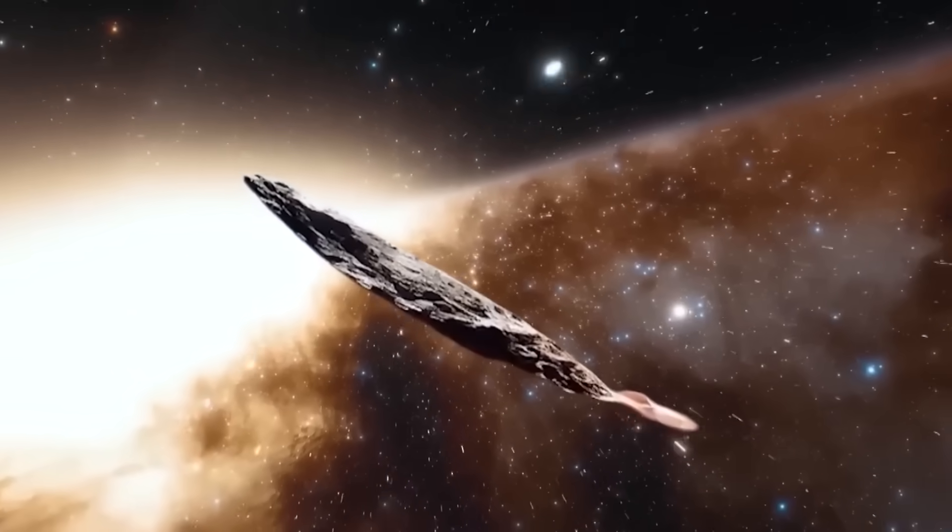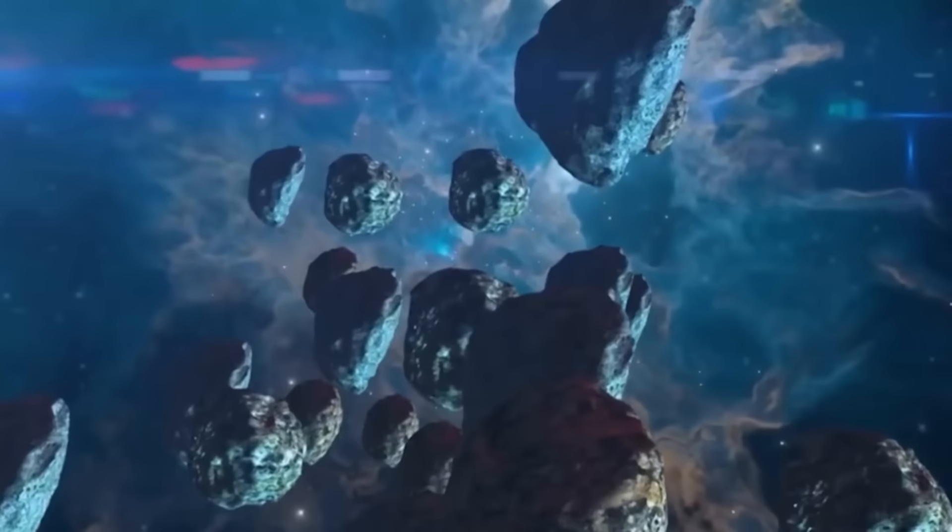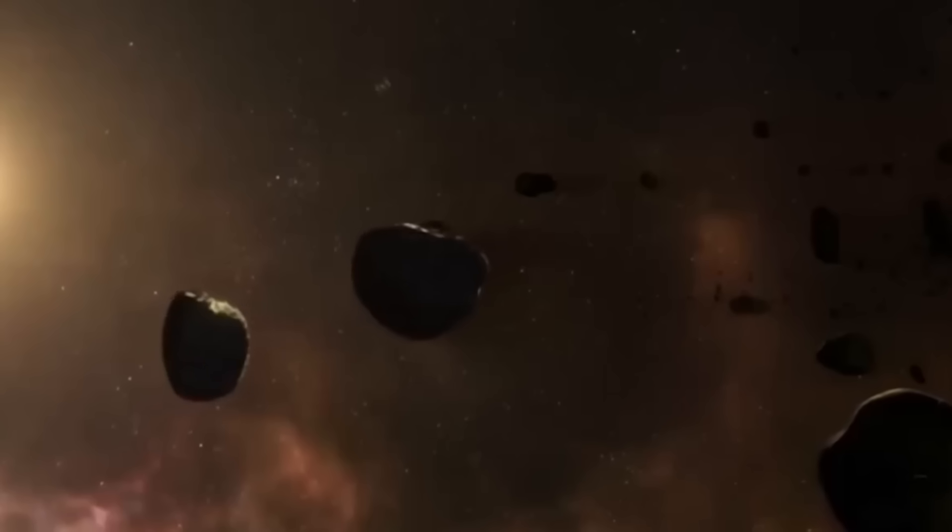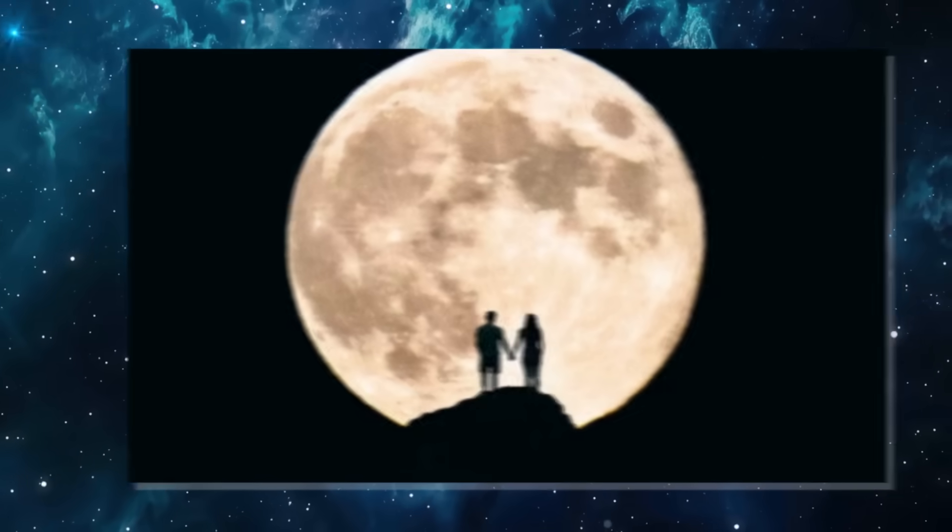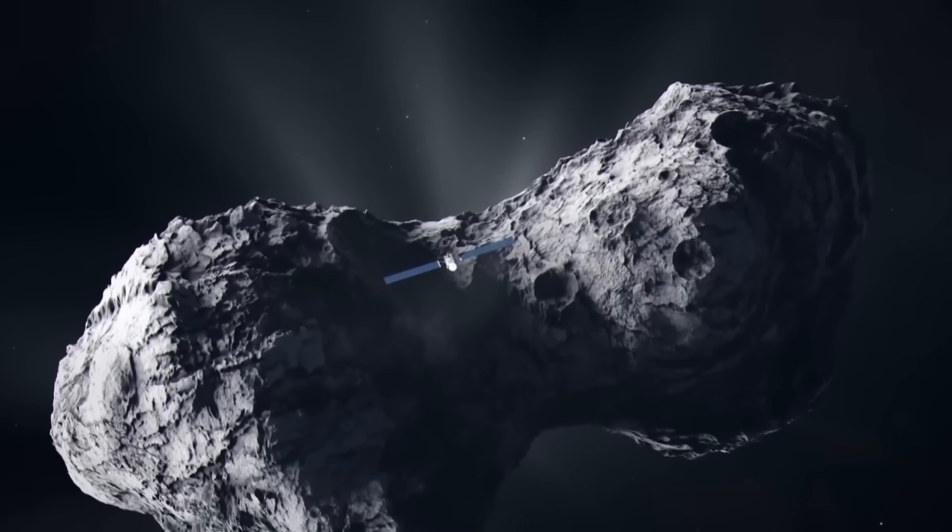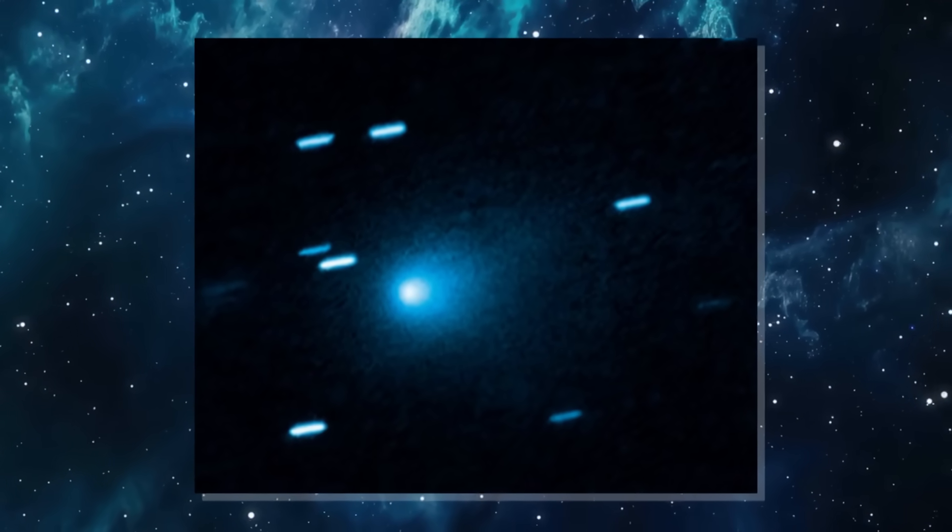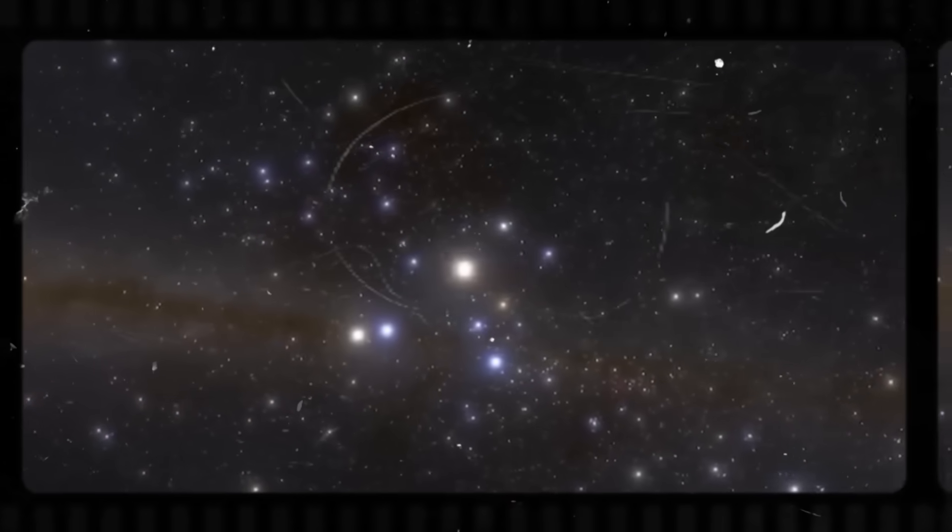Others suggest that its timing, arriving just as 3I Atlas closes in on its own solar encounter, cannot be coincidence. Its physical features are just as astonishing. The newcomer's tail stretches nearly two and a half degrees across the sky, roughly five times the width of the full moon as seen from Earth. Against this dazzling sweep of light, 3I Atlas's own thin filament of a tail looks almost insignificant, like the trail of a lone matchstick compared to a wildfire.